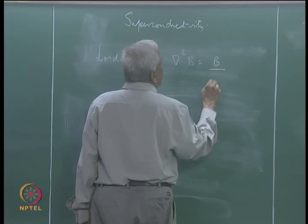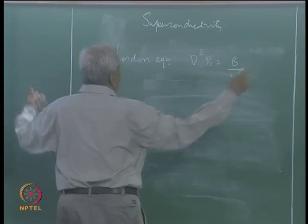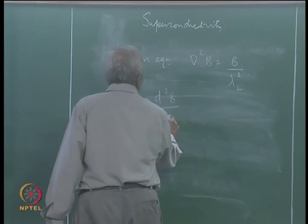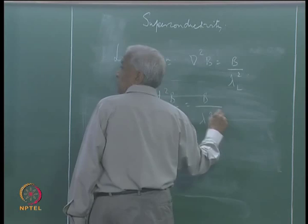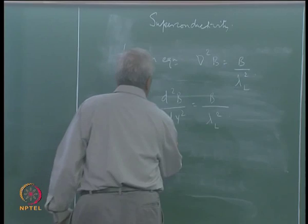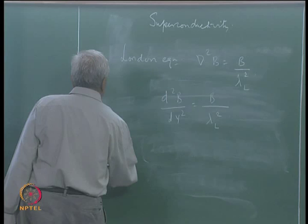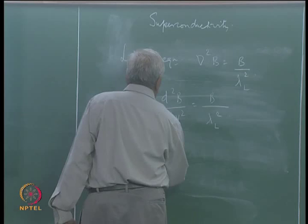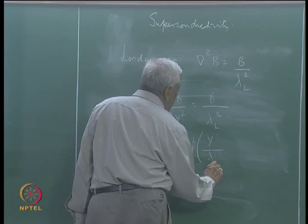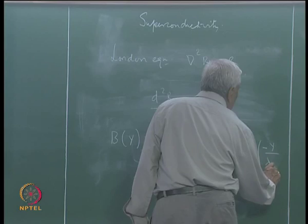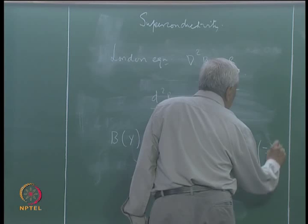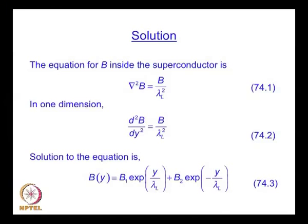The corresponding one-dimensional equation is d²B/dy² = B / λ_L². This is a second-order differential equation whose solution is B = B₁ exp(y/λ_L) + B₂ exp(−y/λ_L). That is the expression for the magnetic induction as a function of y within the superconductor.